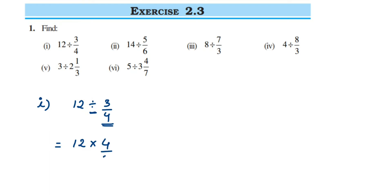The reciprocal of the second number is 4/3. Now cancel if possible — you can cancel 3 and 12, since 3 fours are 12, so we're left with 4 in the numerator. So 4 times 4 is 16. 16 is the answer.